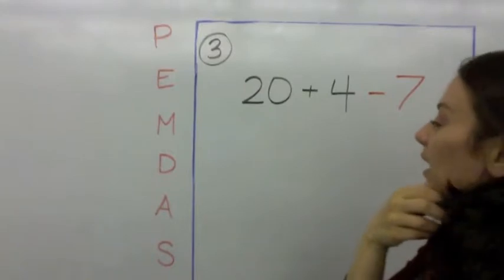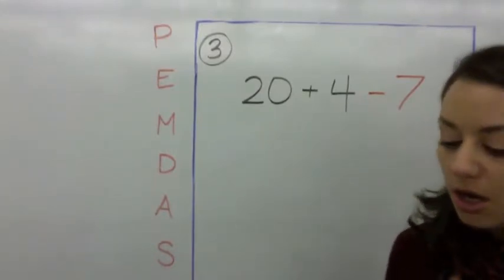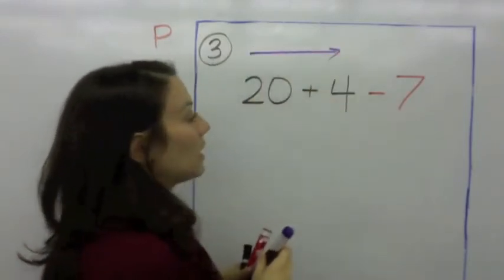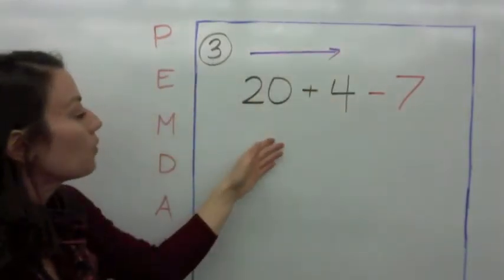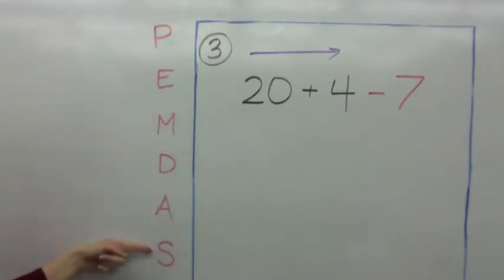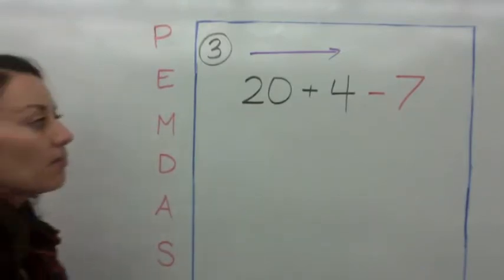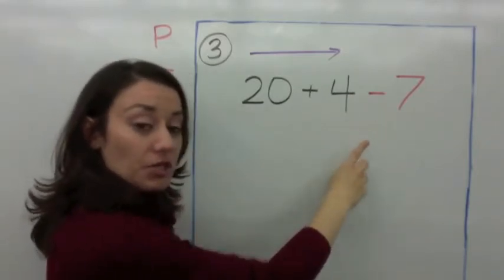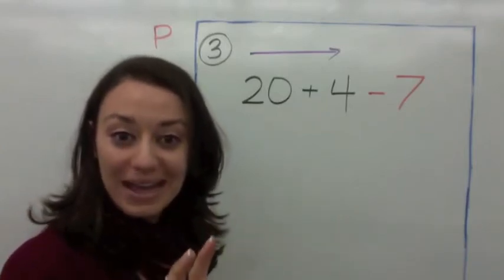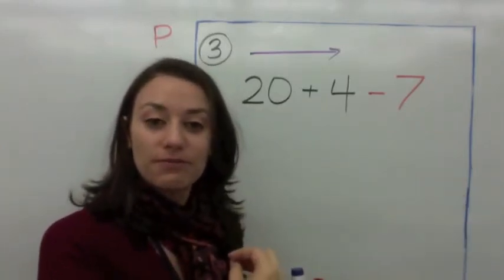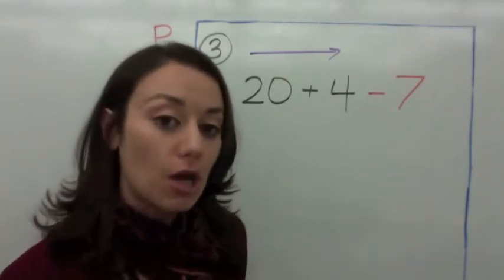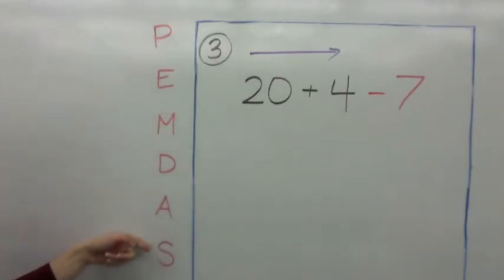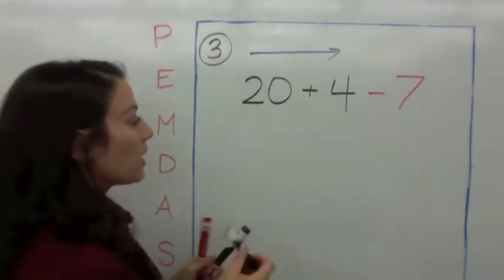Now let's look at what happens when you're working with addition and subtraction. You always work from left to right, just the way that you read. The order of operations says we do addition before subtraction. If we tried to do subtraction first — 4 take away 7 — you can't take a bigger number away from a smaller number.